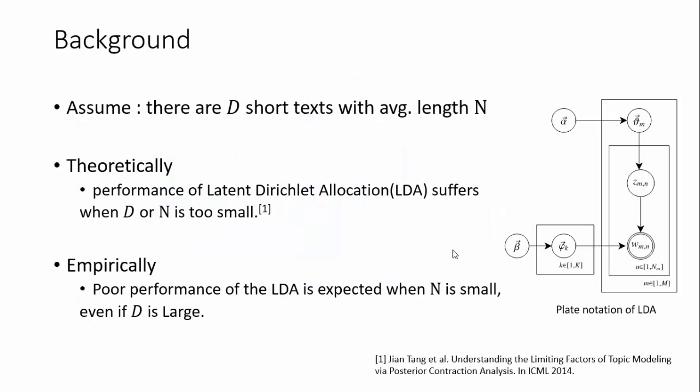As background, we assume there are D short texts with average length N theoretically. We get poor performance of LDA when D or N is too small.